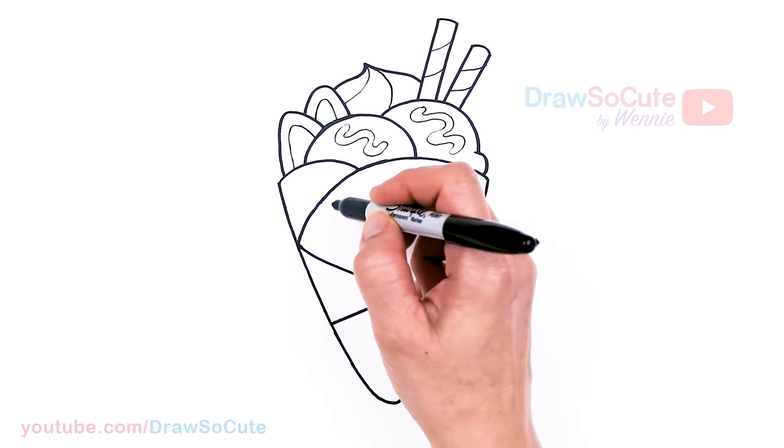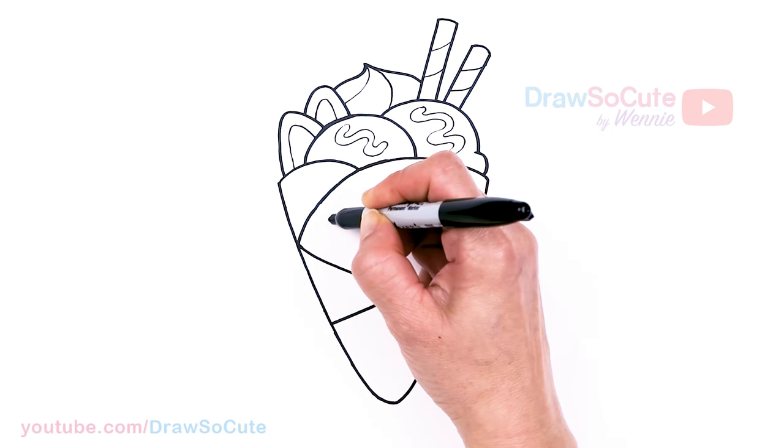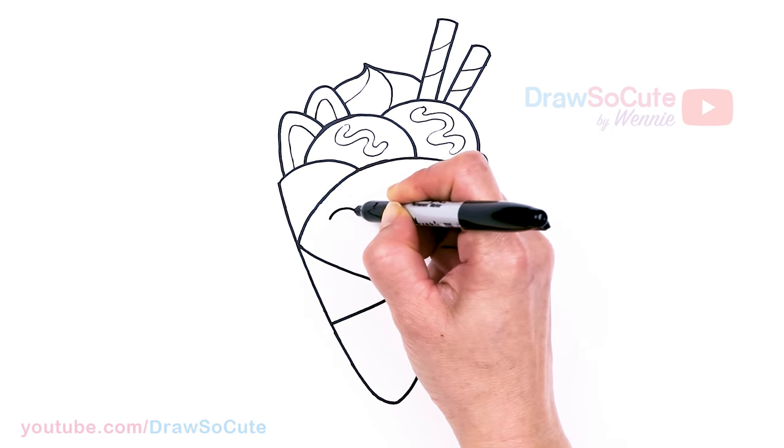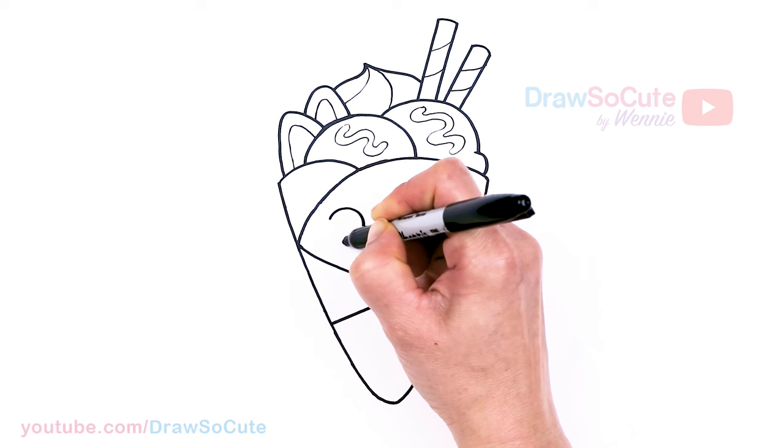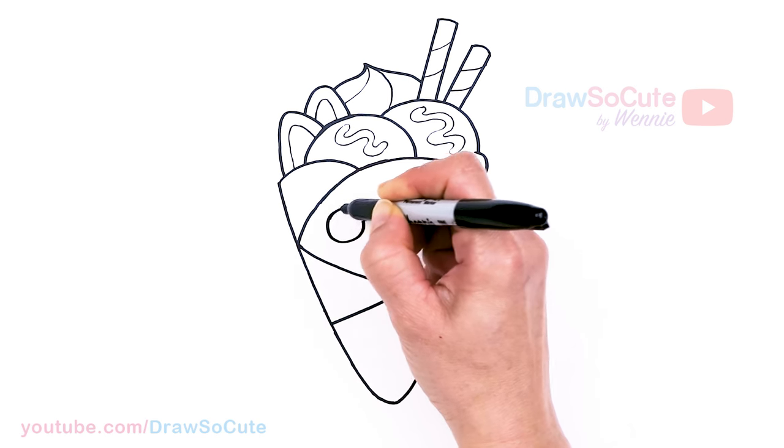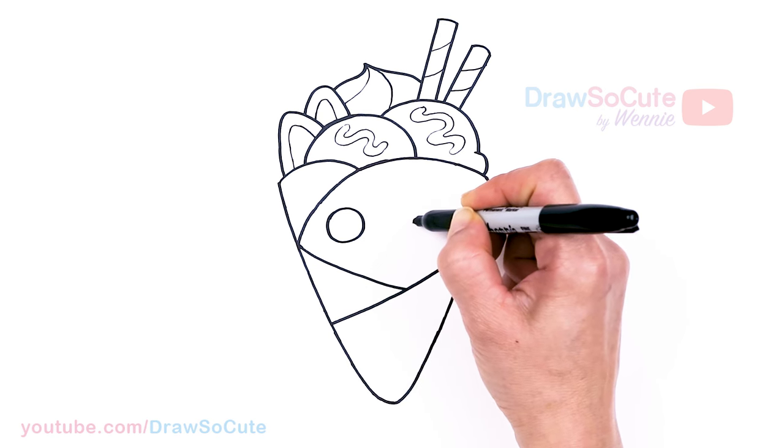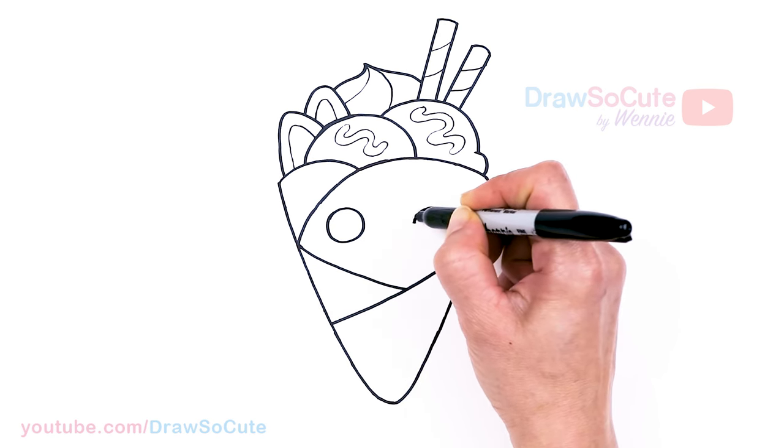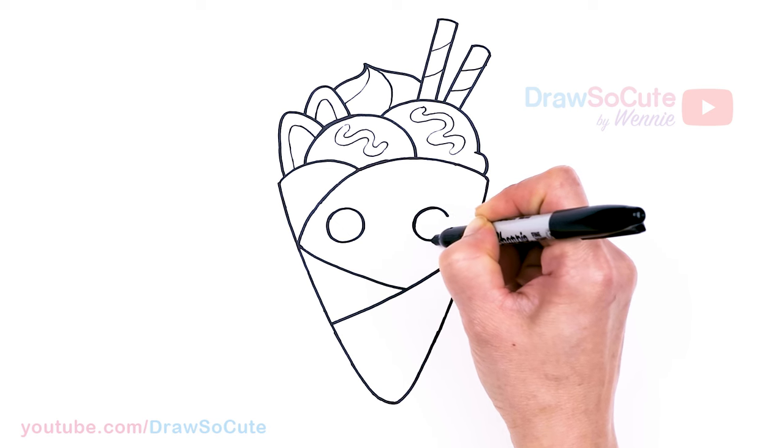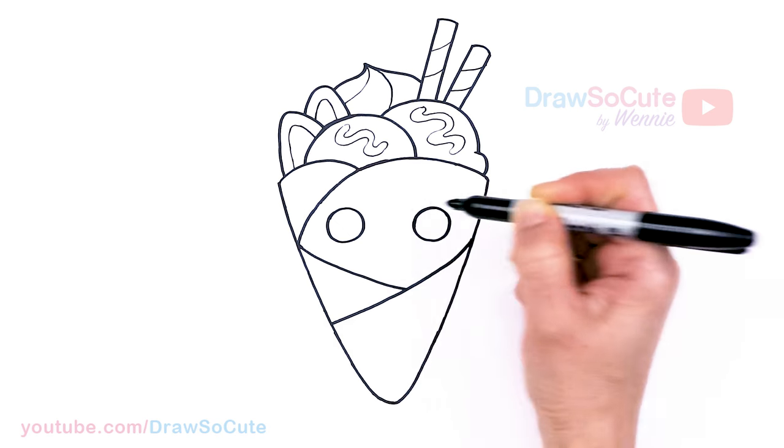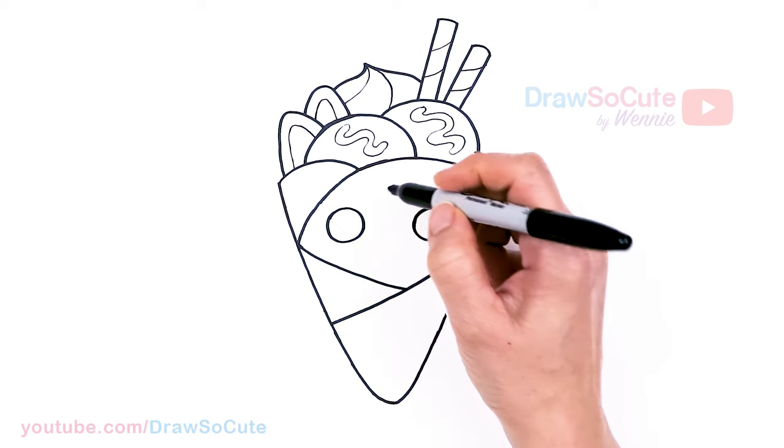So I'm going to come into this area. Now that we have enough space, I'm going to say about right here. And I'm going to add a big circle for some draw so cute eyes. Come across about right here and draw the other eye. There. Now my two circles in.